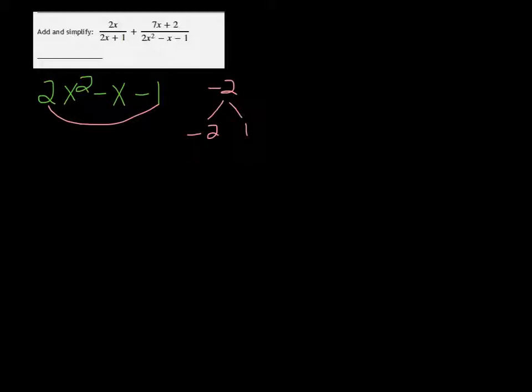Well, of course that would be negative 2 and 1. So I can split it up now as 2x squared minus 2x plus 1x minus 1. So I'm taking this minus 2 and this 1 and we're replacing that minus x.